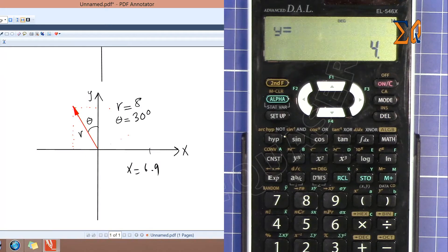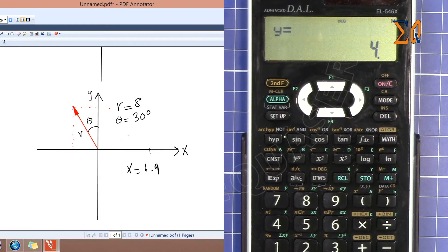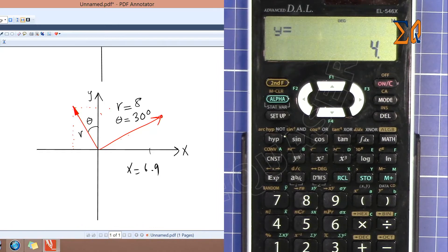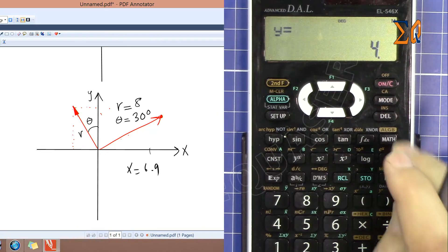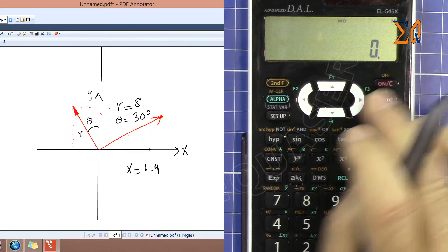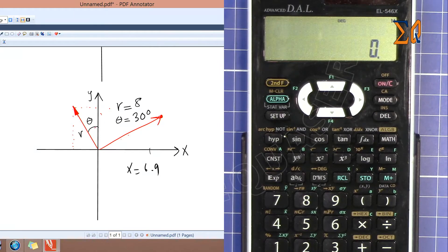If I press second function on this, it shows Y as 4. So X is 6.9 and Y is 4. This is giving us a coordinate somewhere here, which is incorrect. To fix this issue we have to know that this 30 degrees is after this 90 degrees.